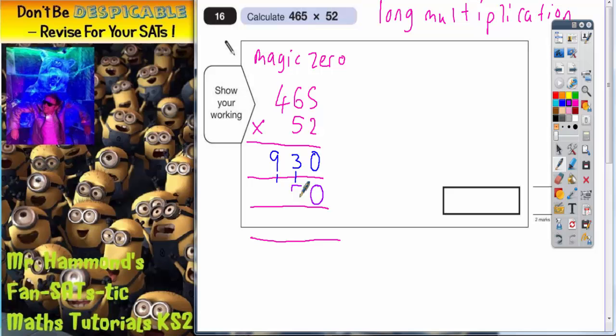So 5 5s are 25, put the 5 in, carry the 2. 5 6s are 30, plus the 2 is 32, carry the 3. 5 4s are 20, plus the 3 is 23.